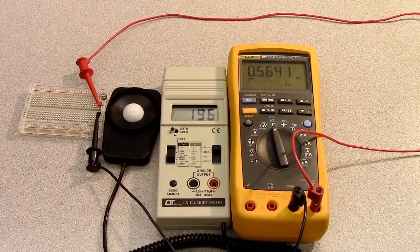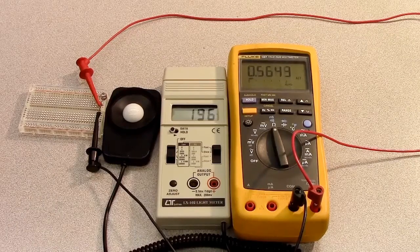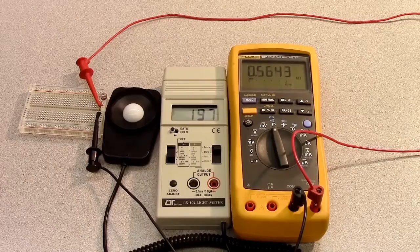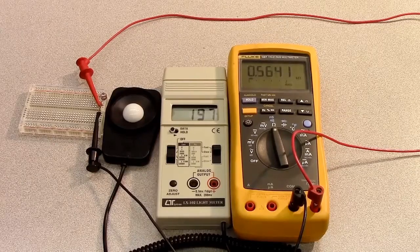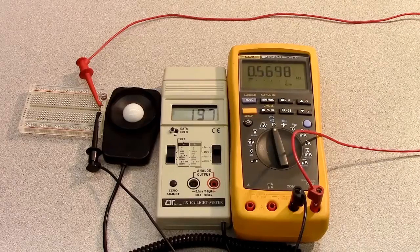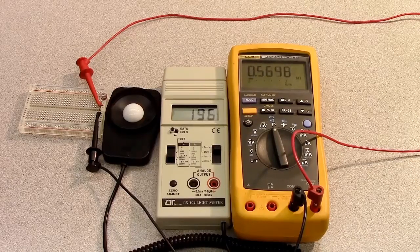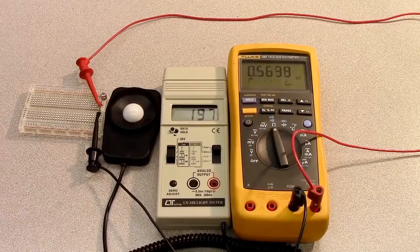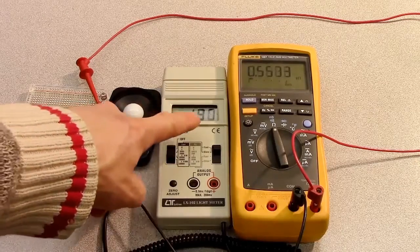This is the initial test setup with an LDR connected on the left into a breadboard with a voltmeter, or actually an ohmmeter, set up and connected to the LDR to measure the resistance. In the middle you can see the lux meter with the sensor and display.